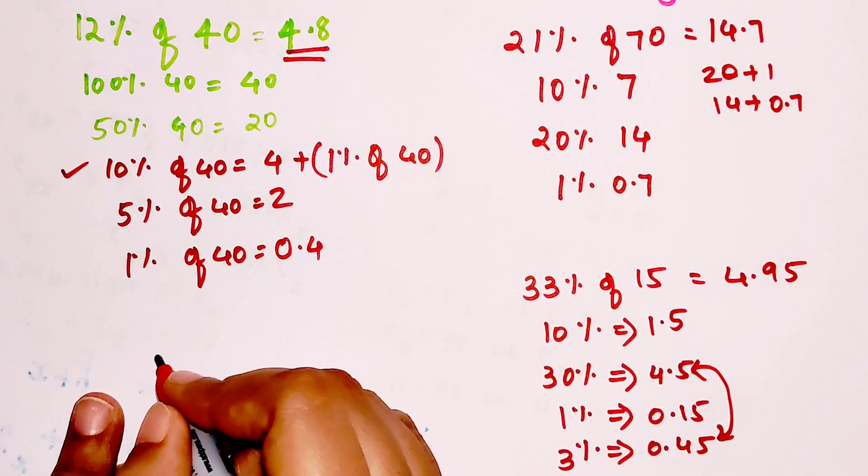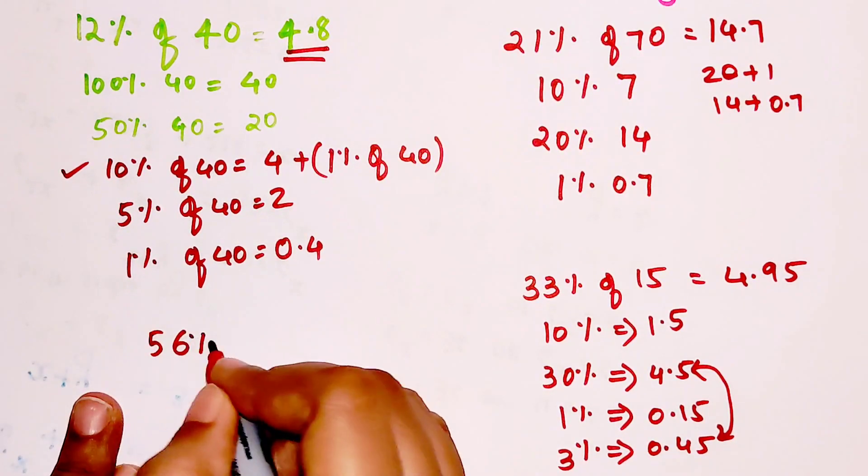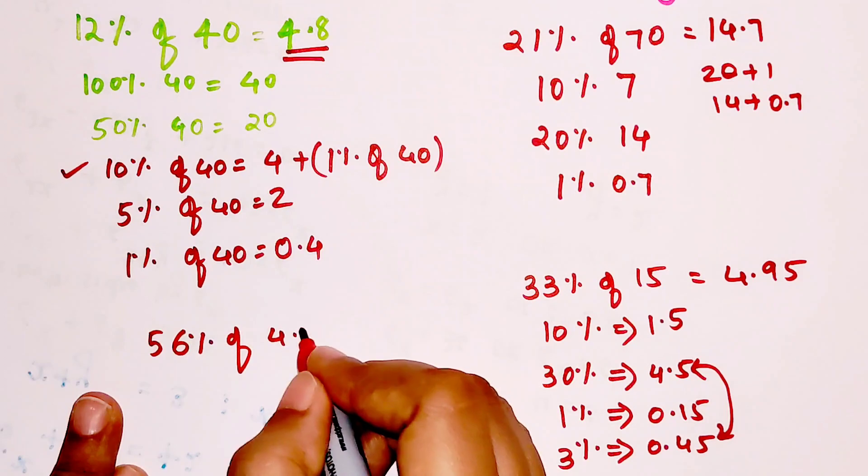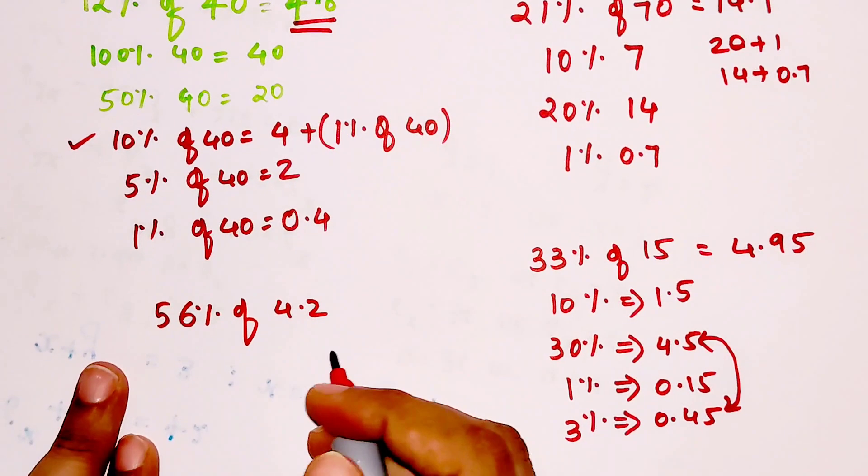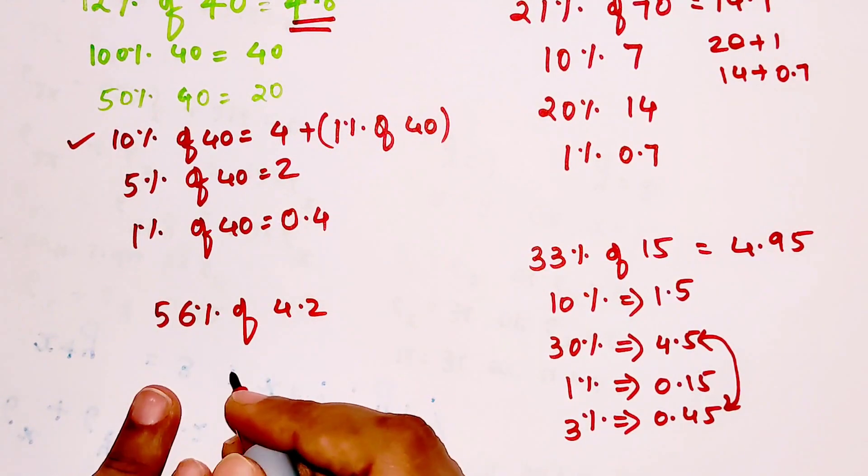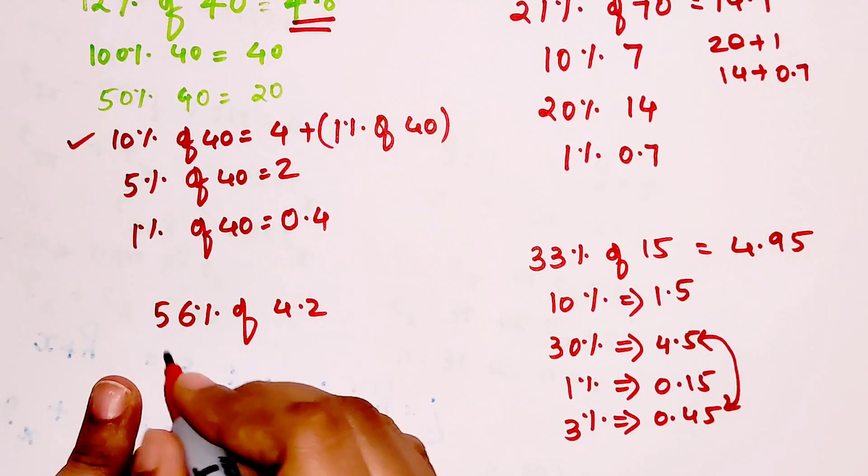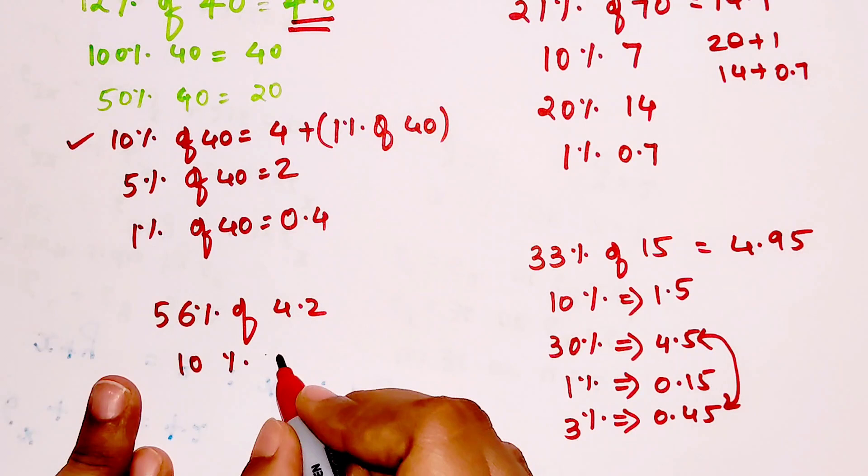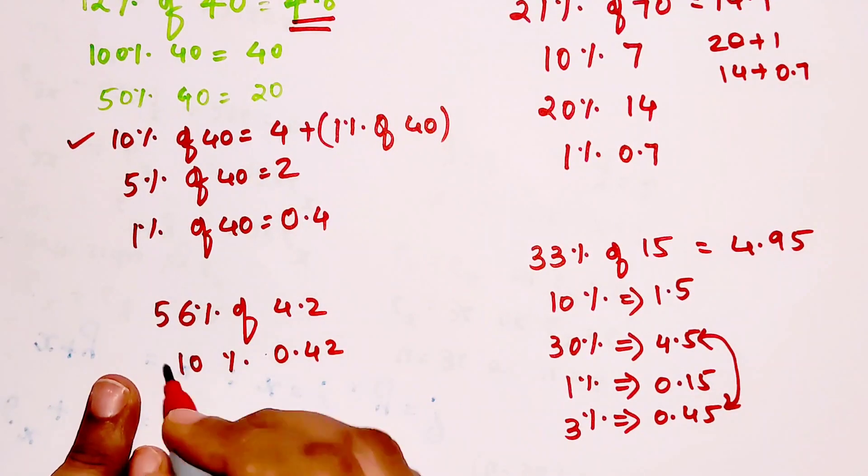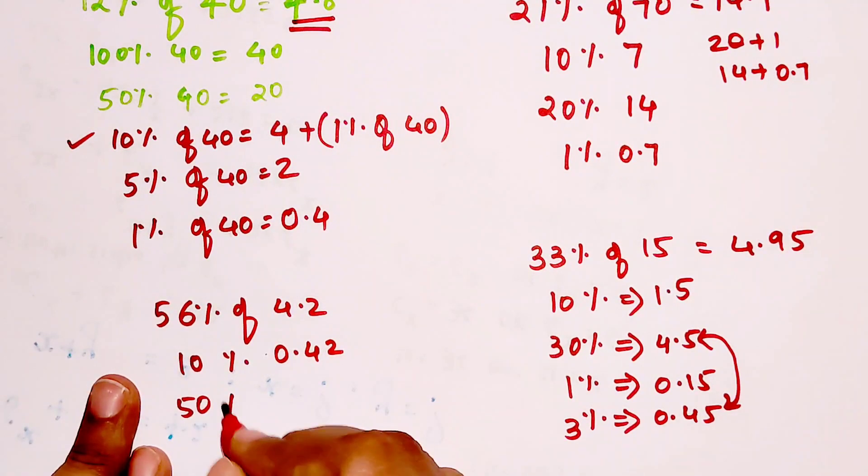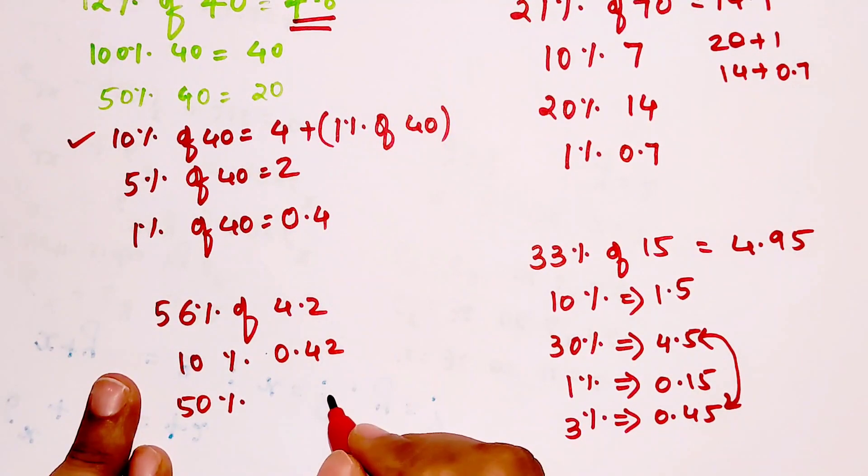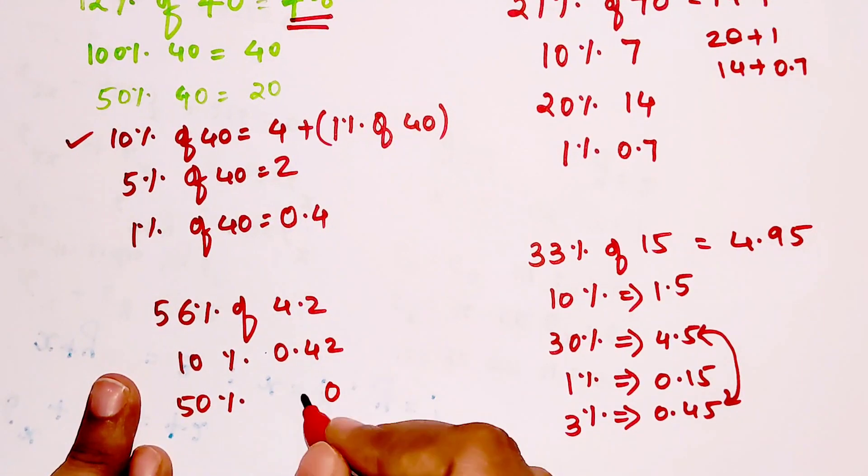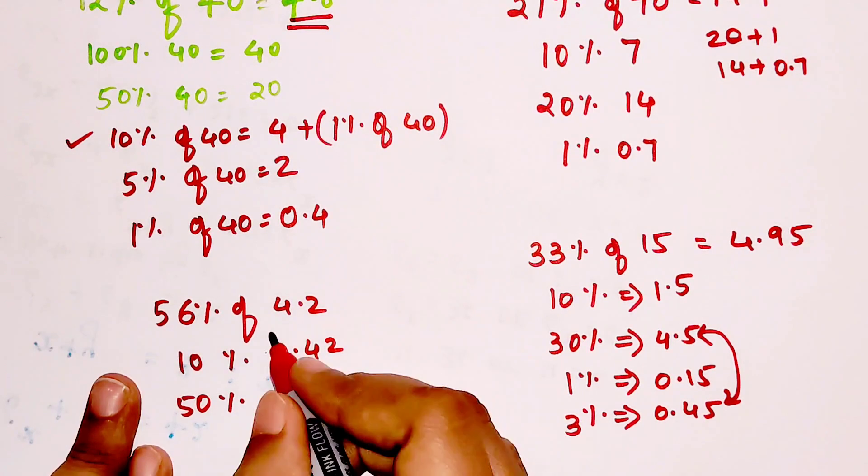So you saw how easy these things became. Now let's look for something in a decimal. Let's look at 56% of 4.2. I know it's a very random thing but I thought let me show you how easily this works for everything. So let's look at 10%, we get 0.42, correct.